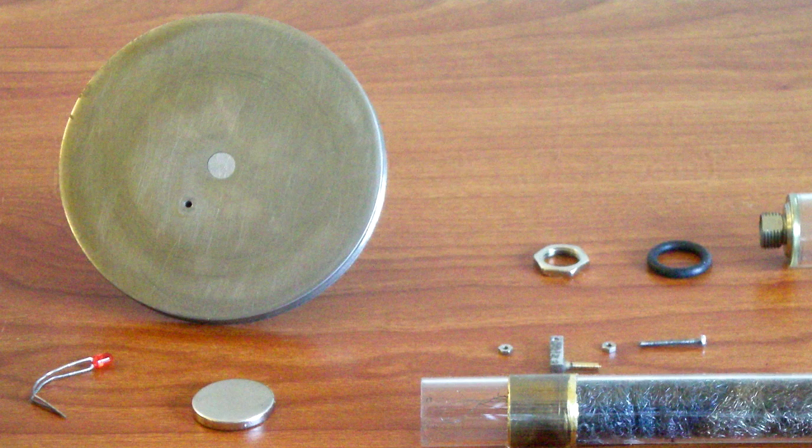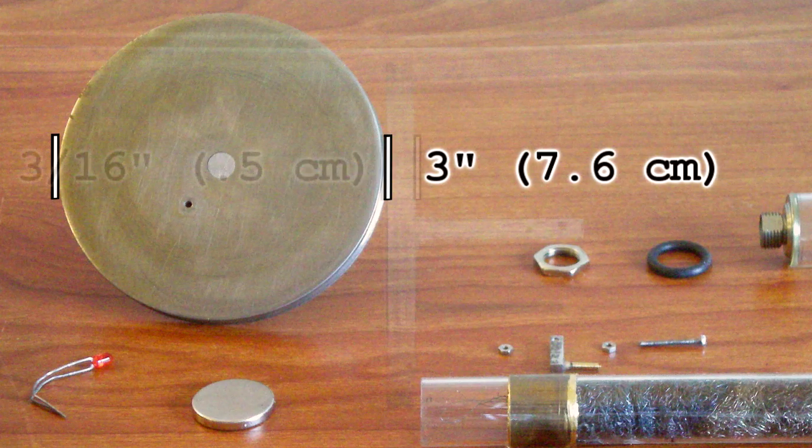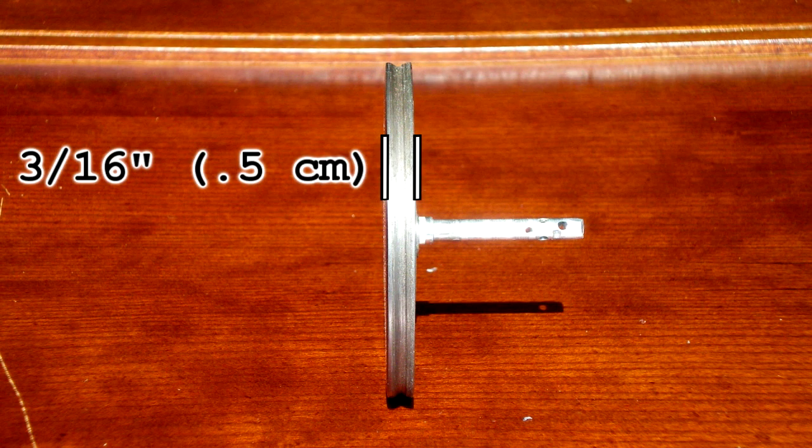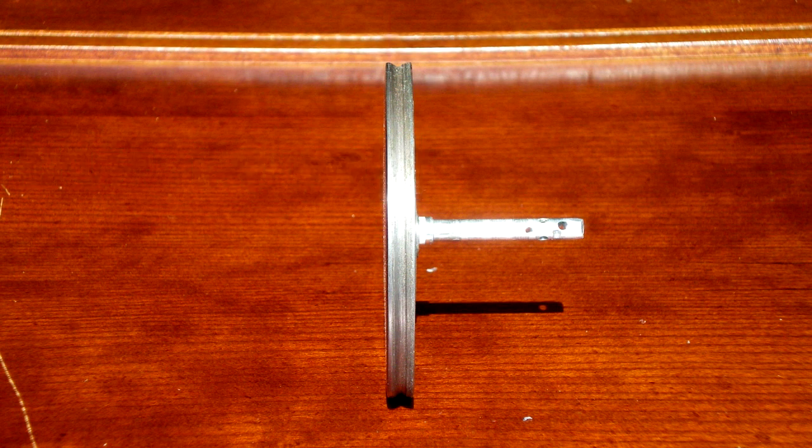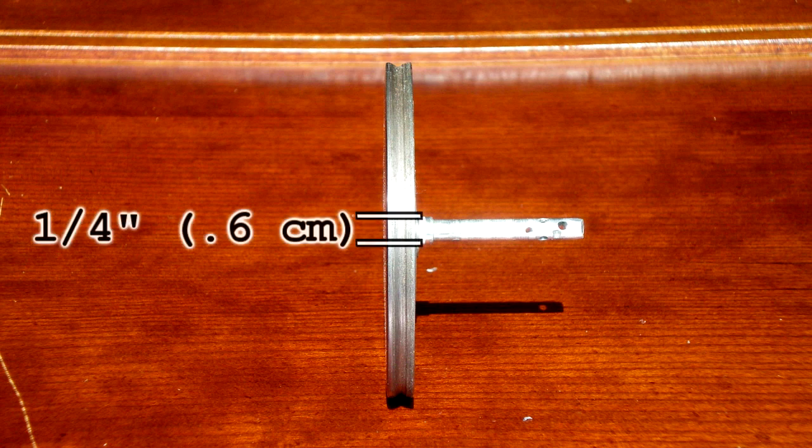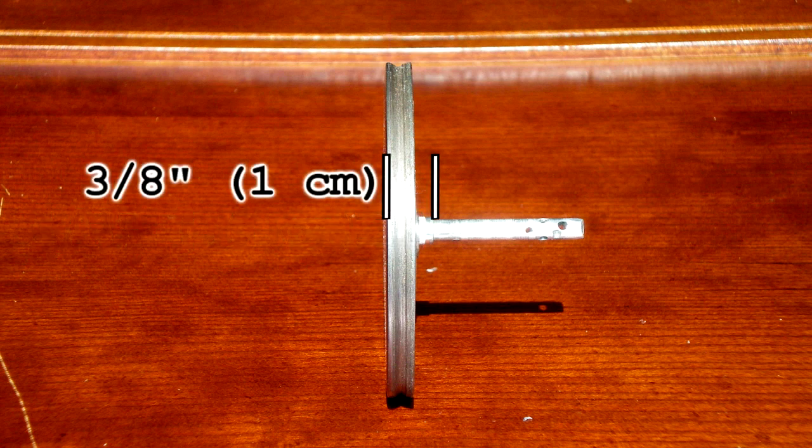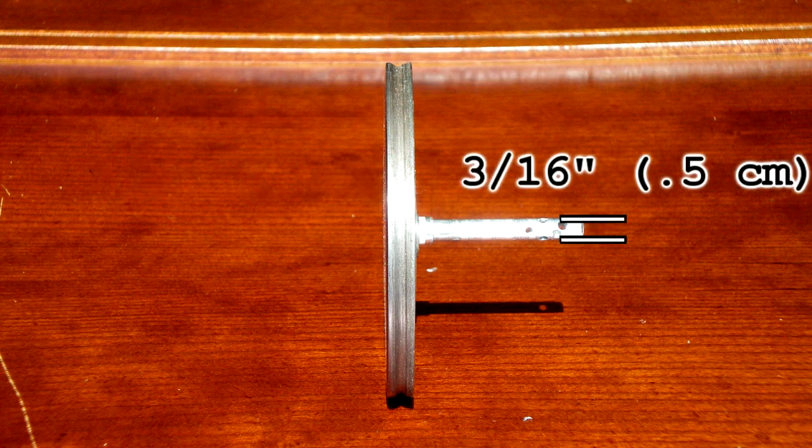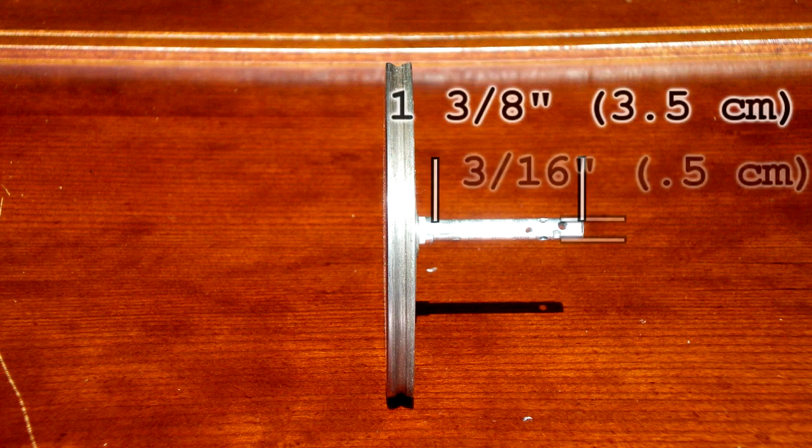The flywheel is made of steel and is 3 inches in diameter by 3 sixteenths of an inch. The shaft of the flywheel is made of aluminum. The thicker part that is attached to the steel disc is 1 quarter inch in diameter and is 3 eighths long. The skinnier portion of the shaft is 3 sixteenths and is 1 and 3 eighths long.